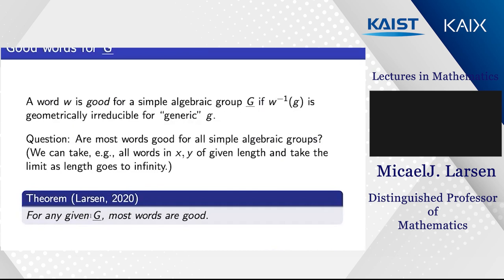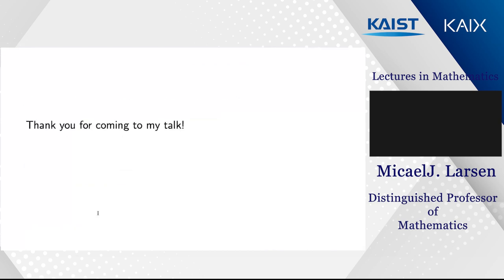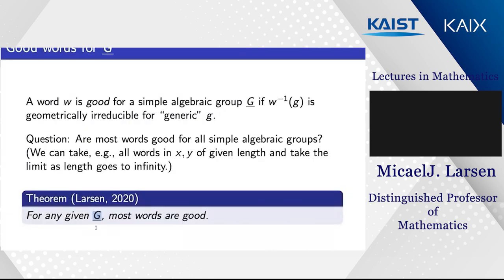There is a theorem that for any given algebraic group G, most words are good. This is not yet the theorem we want — which would say most words are good for all simple algebraic groups simultaneously. What we can say is: give me a fixed group like SL₃, and I can show that for almost all words, the word map on SL₃(𝔽_{p^n}) is surjective as n→∞. This is weaker than the other results in a different way: those applied to small classes of words with strong conclusions; this applies to most words but with a weak conclusion.